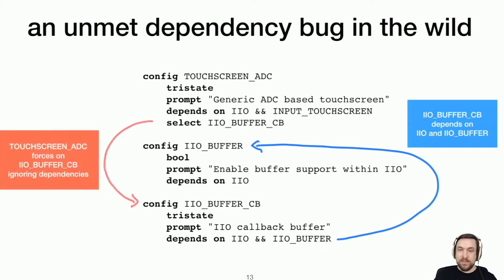But at the same time, whenever touchscreen ADC gets enabled, the IIO buffer CB gets force enabled, regardless of whether its dependencies are met. And the thing is, is that just looking at this is not enough to tell us whether there actually is a potential for an unmet dependency, because there could be some other dependencies on IIO and touchscreen ADC that ensure that that force enabling can never happen.